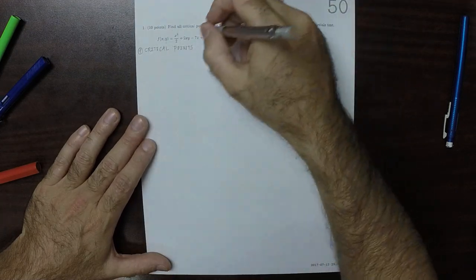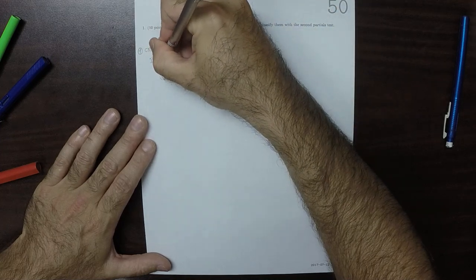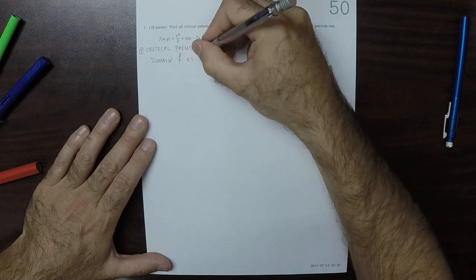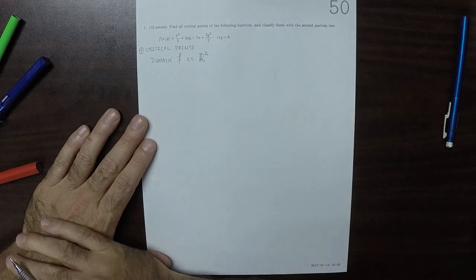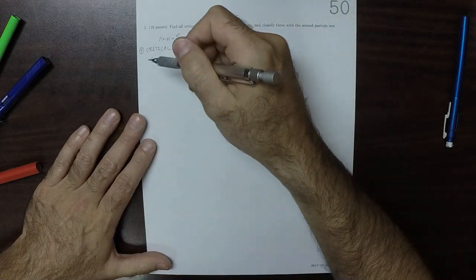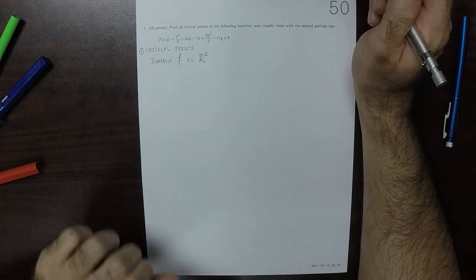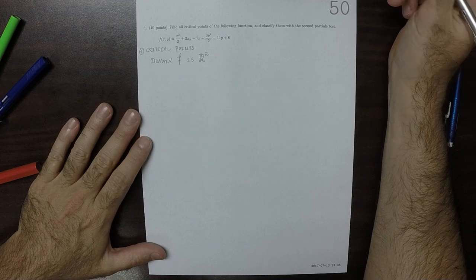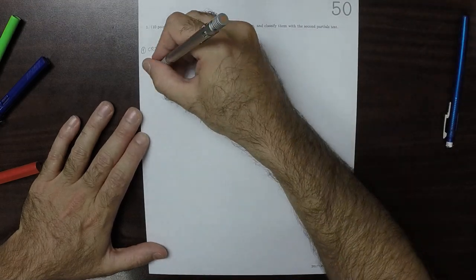The domain of f is the whole plane. That is to say that there's no divisions or square roots or anything like that. In particular, f is a polynomial in two variables, so it's defined everywhere. Let's compute its partials.